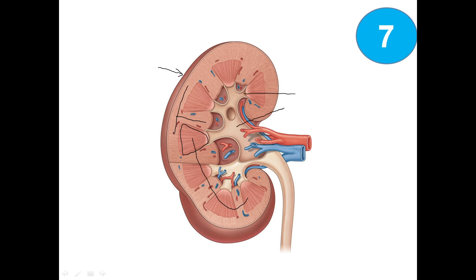Major calyx and the renal pelvis. We got here the renal artery, renal vein, and this one is the ureter. And this hollow space here is known as the renal sinus.